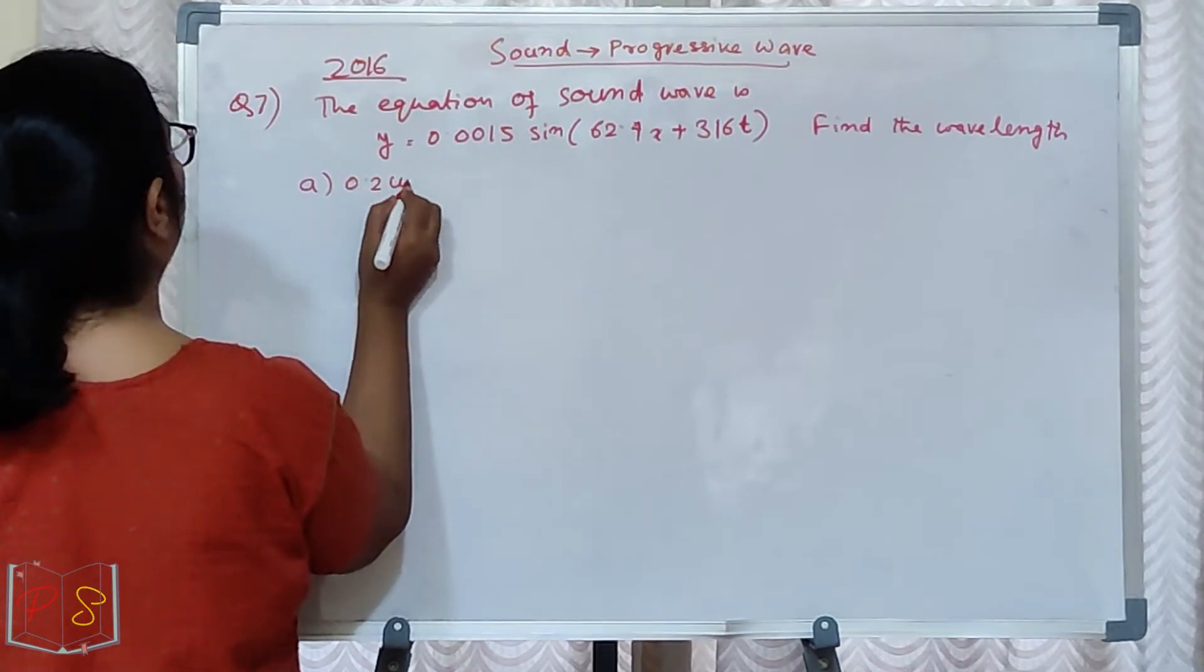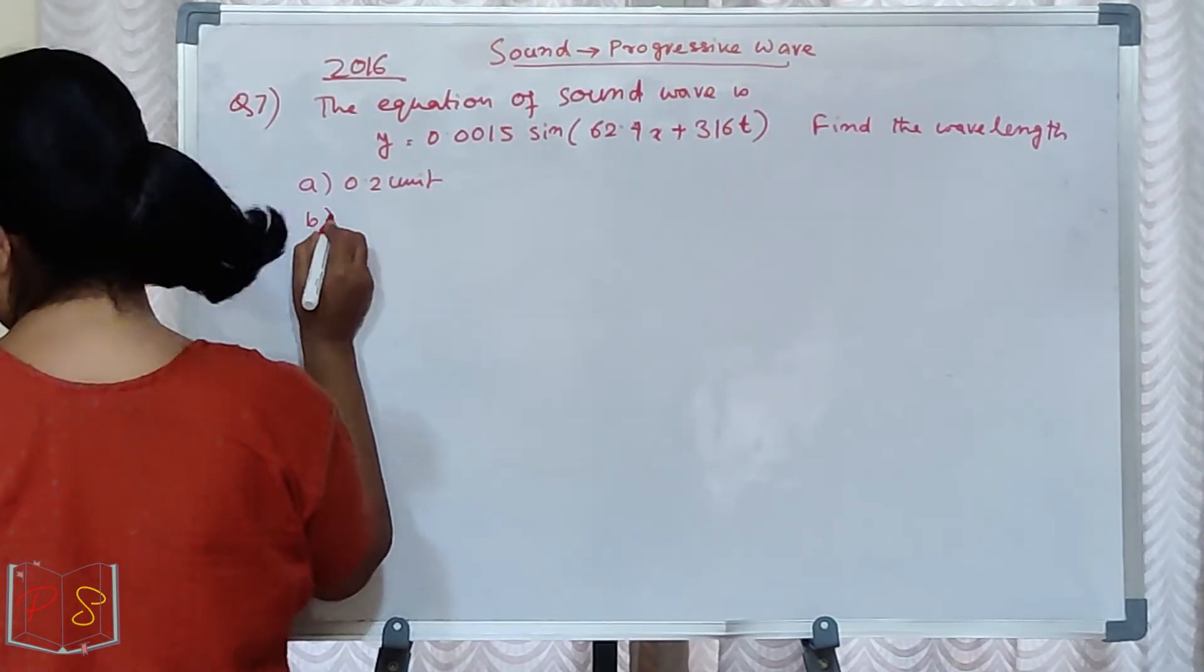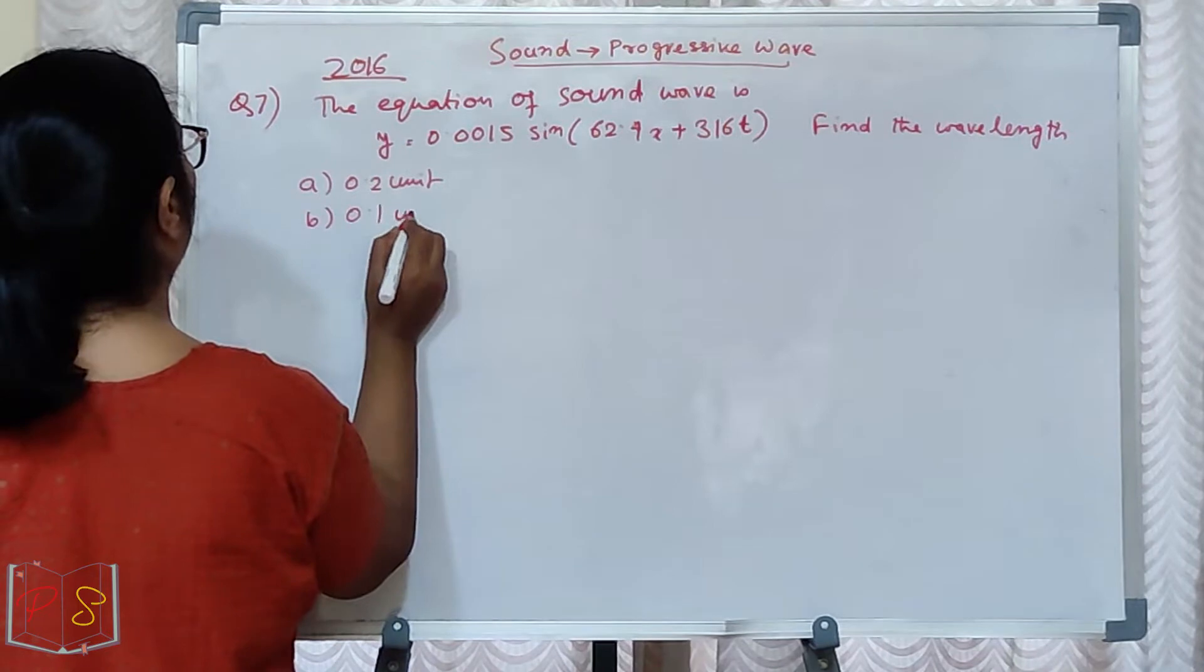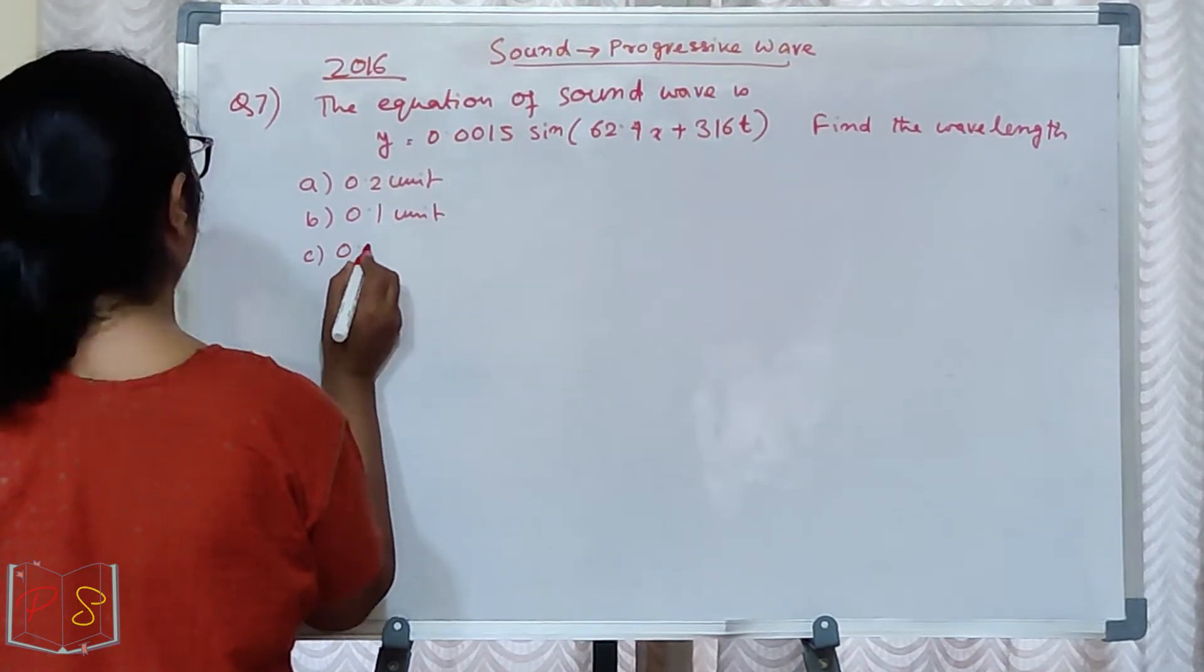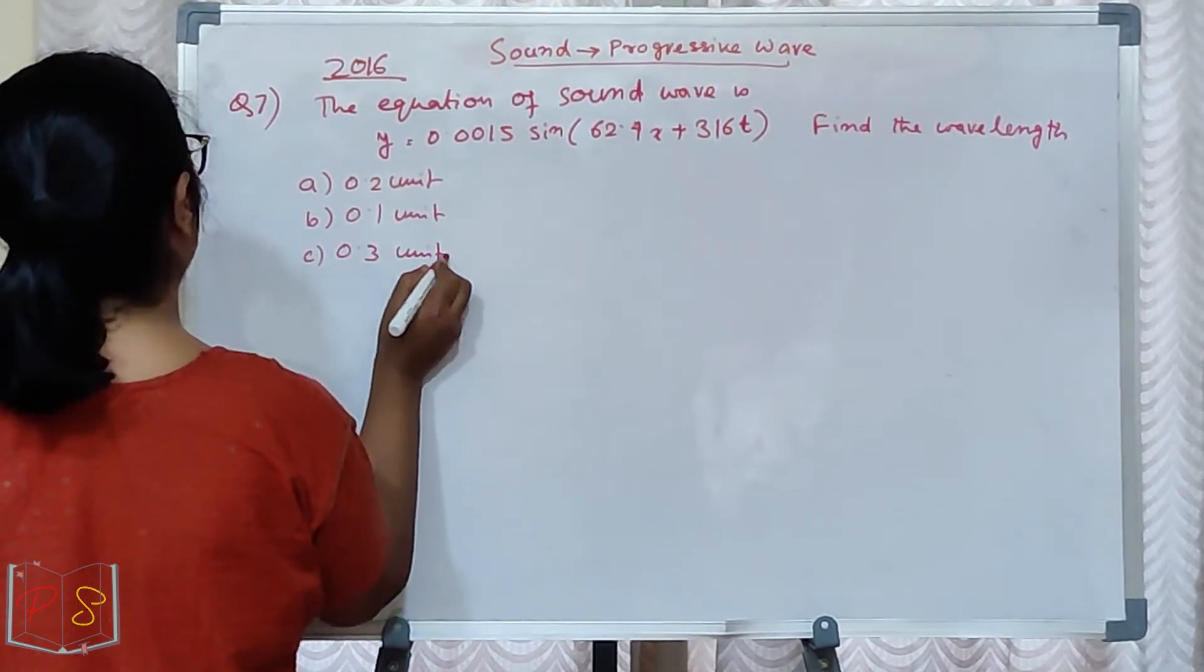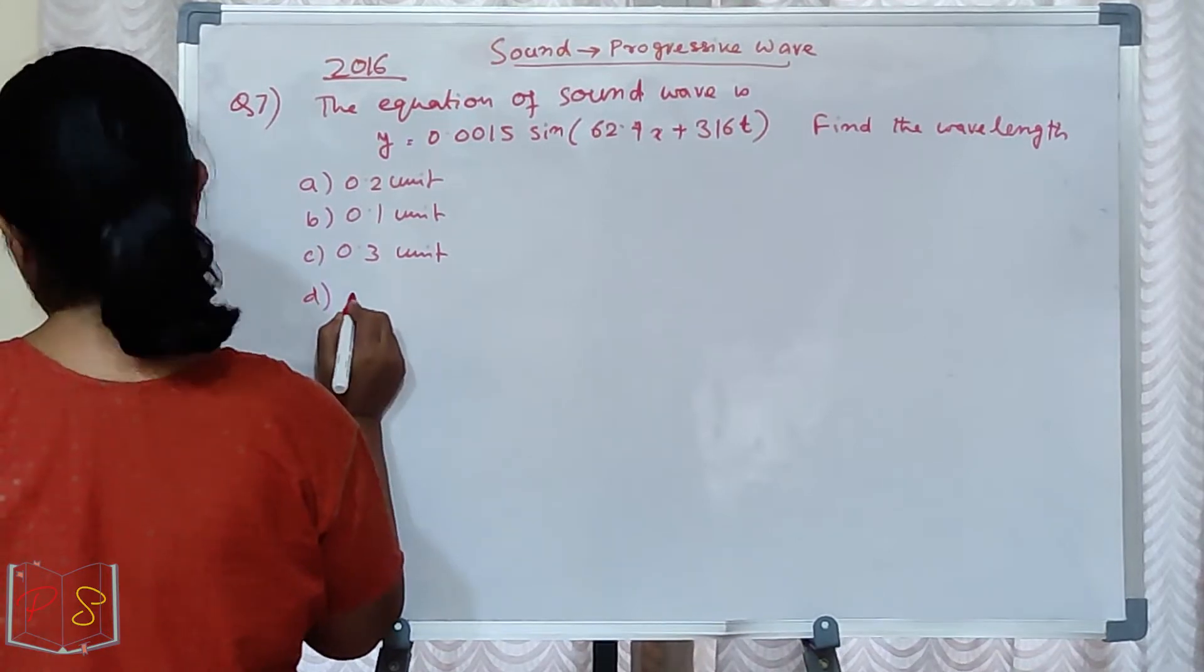Option A is 0.2 unit. B option is 0.1 unit. C option is 0.3 unit. And D option is none of this.